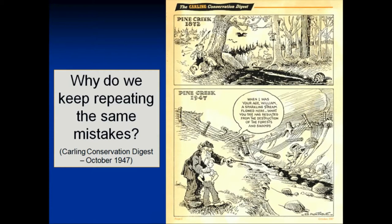This is a cartoon from the Carling Conservation Digest — from 1947 — showing Pine Creek in 1872: a beautiful little stream, forested landscape, trees, birds, little critters, and a young lad bringing home a nice stringer of brook trout. And there's the same young lad, now old, talking to his grandson, saying, 'When I was your age, William, the sparkling stream flowed here. What you see is the result of the destruction of the forests and the swamps.'